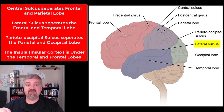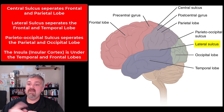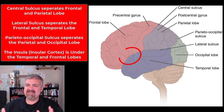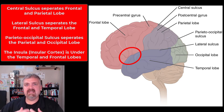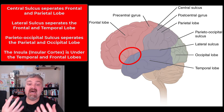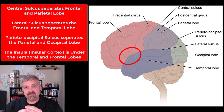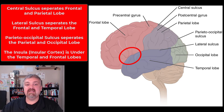We also have the lateral sulcus, which separates the frontal lobe from the temporal lobe. The parieto-occipital sulcus separates the parietal lobe from the occipital lobe. There's also an area called the insula or insular cortex — insula means island — and it's located inside, underneath that lateral sulcus. If you were able to peel the frontal and temporal lobes apart, you'd find the insula on the inside.